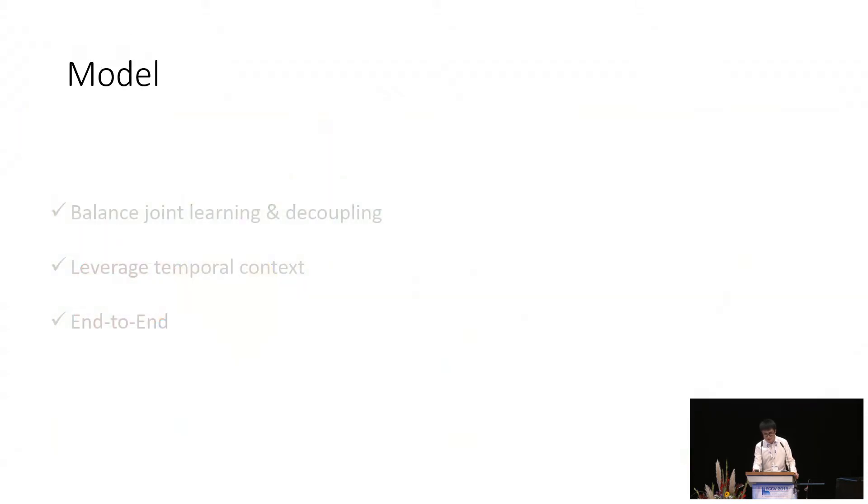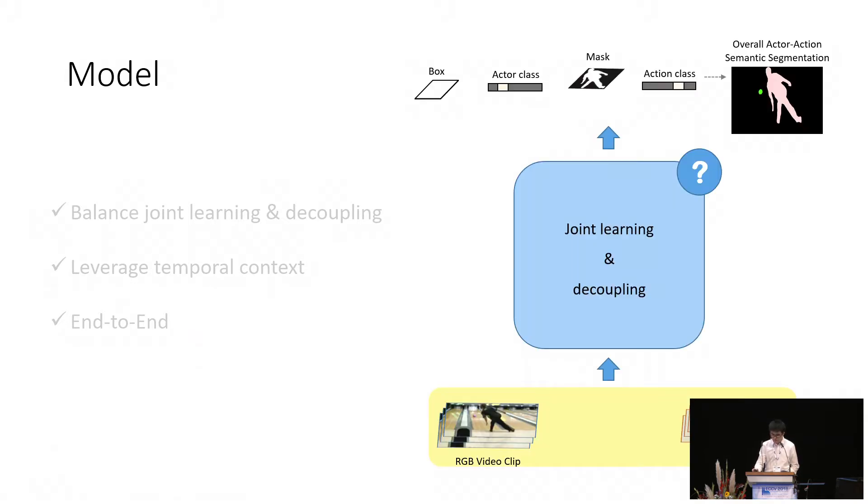Let's now see how we design our model around these three goals. First, note that our input is a video clip and our model should produce a segmentation for each actor and action in the clip. We compose this final output by solving several subtasks. We predict the localization bounding boxes, actor class, actor segmentation mask, and also the action class label. We then merge these four outputs to compose the final actor-action semantic segmentation.